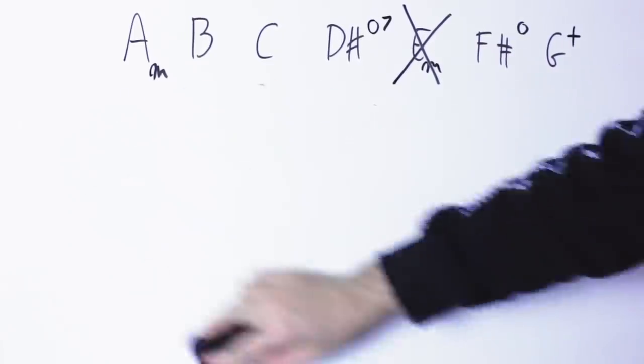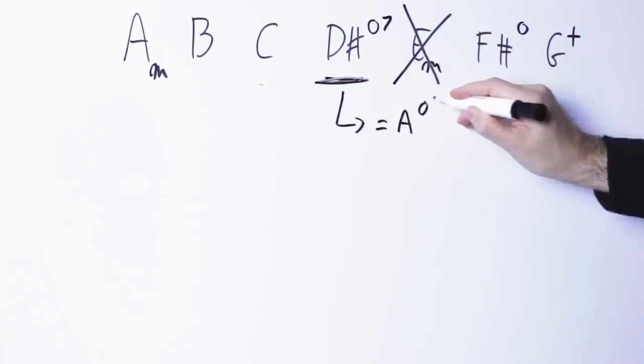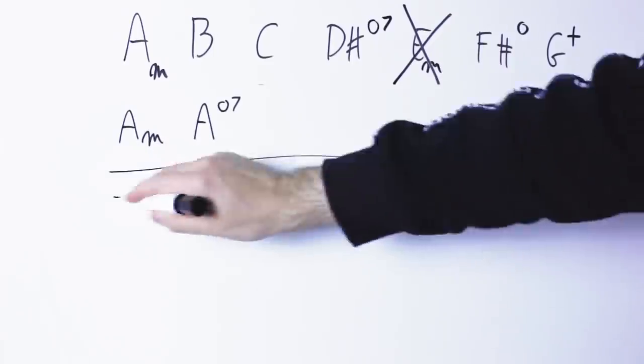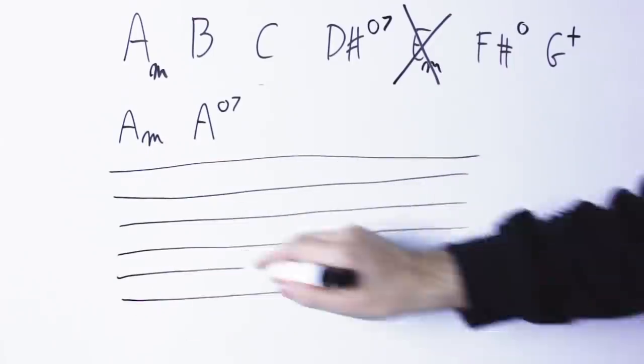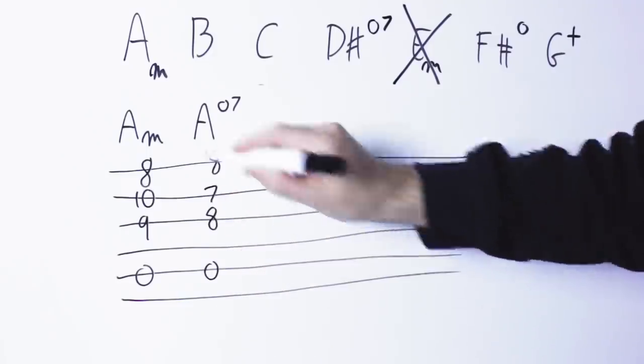Another thing I can do is to employ this D sharp diminished seventh chord. Now D sharp diminished seventh is the same as A diminished seventh so what I'm doing is I'm playing A minor and following with A diminished seventh. If you spell out those chords you're going to notice that this A diminished seventh it's pretty similar to a B slash A but not exactly the same.